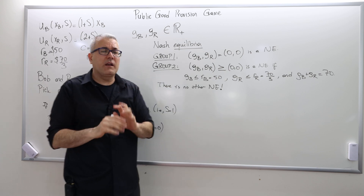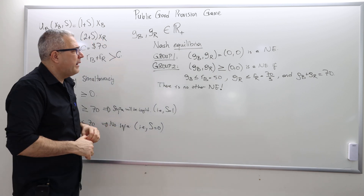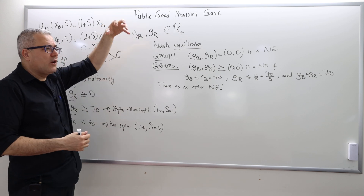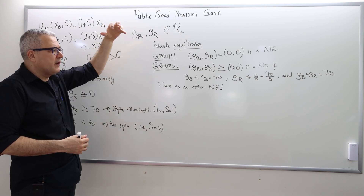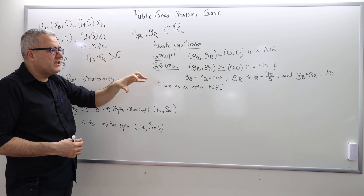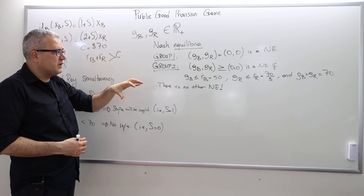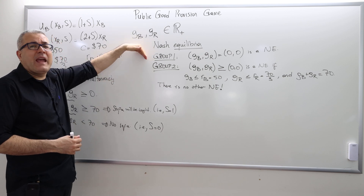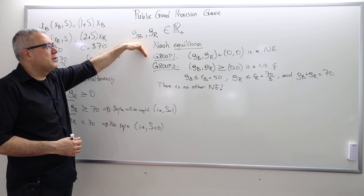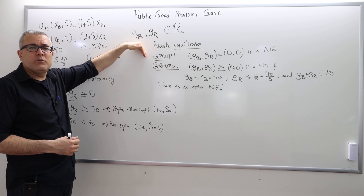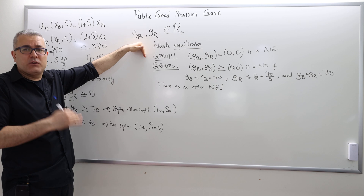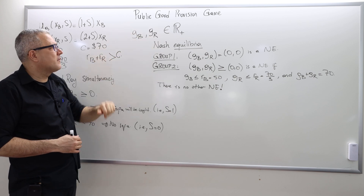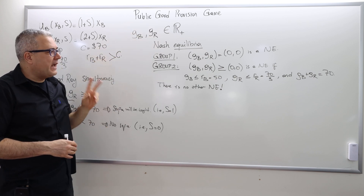If there is no third party imposing a decision on these two agents, they may actually end up playing the bad equilibrium. And it is an equilibrium — it's going to be a regret-free outcome.